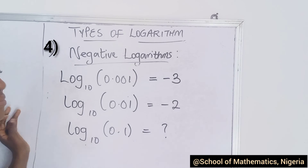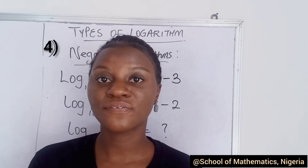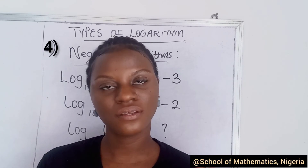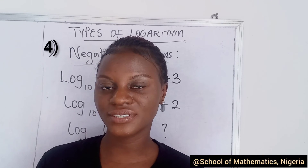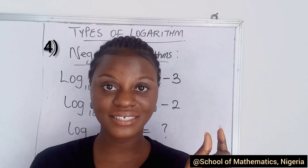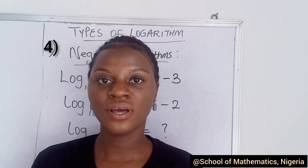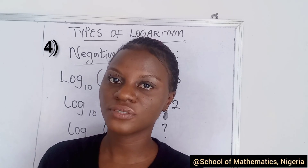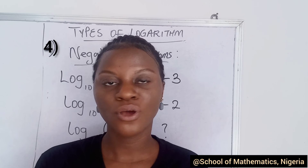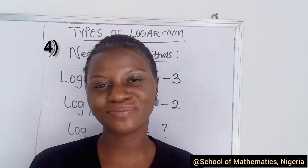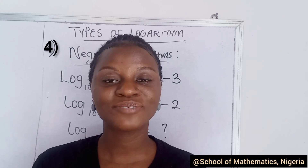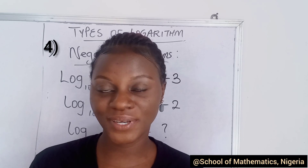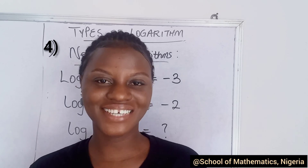In conclusion, we listed four types of logarithms: the common logarithm, the natural logarithm (also known as the Naperian logarithm, using the value e), logarithm with decimals, and negative logarithms. There could be many other logarithms, but these are the four we treated. I hope you learned something — don't forget to like, share this video if you found it useful, and subscribe. See you in the next class, bye!